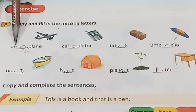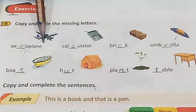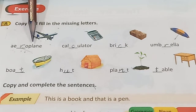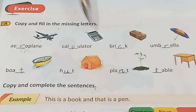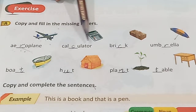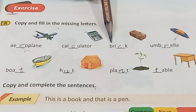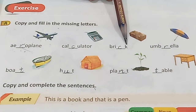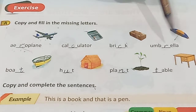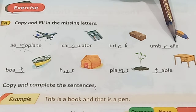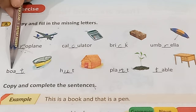Aeroplane: A, blank, R, O, P, L, A, N, E — aeroplane. This picture is a calculator — calculator. Bricks: B, R, I, C, K. Umbrella: U, M, B, R, E, L, L, A — umbrella. Board: B, O, A, T.